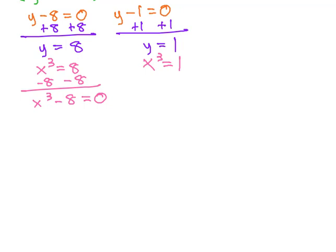You might remember from factoring that this is a difference of cubes. It's gonna factor to x minus 2 times x squared plus 2x plus 4 equals 0.